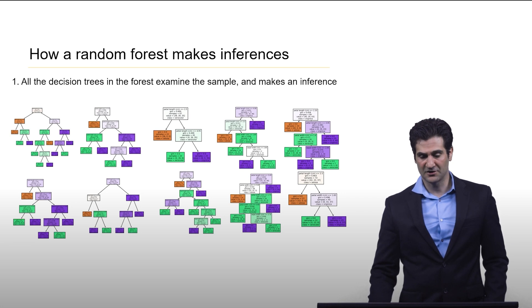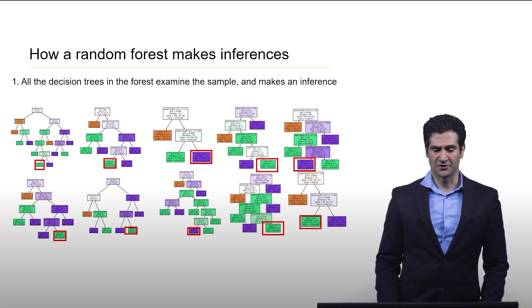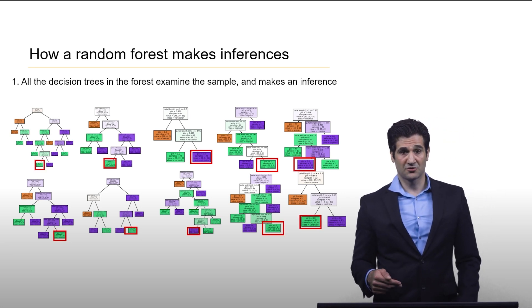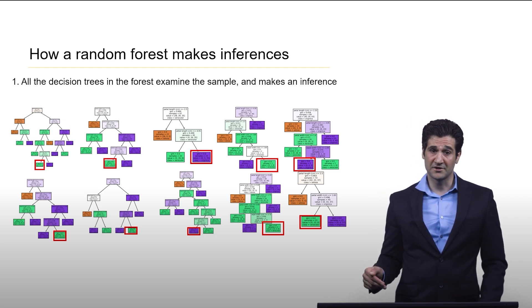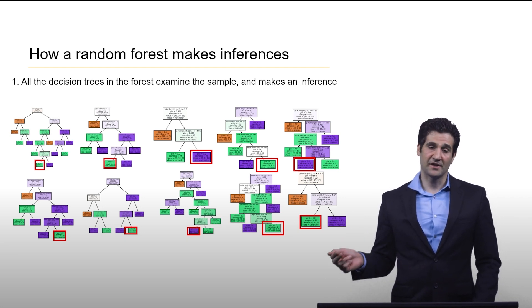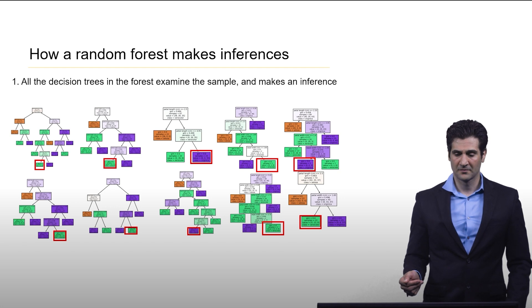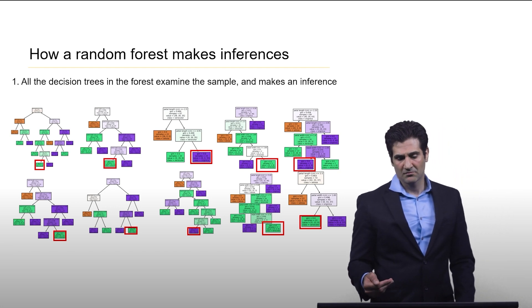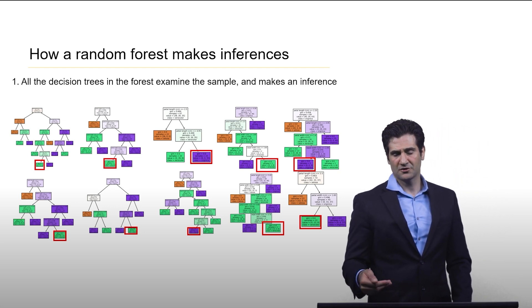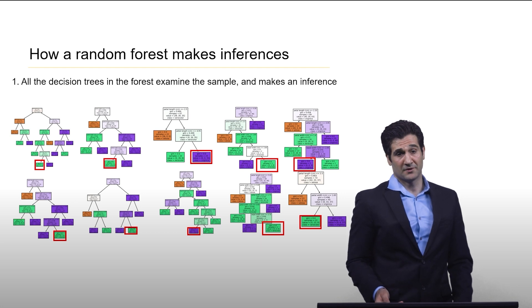Given our new flower, each of these decision trees reaches a conclusion. Now these decision trees are all trained on different subsets of the data, so that's why they look different. Notice that they each have come to a conclusion and not all the time has the conclusion been the same.